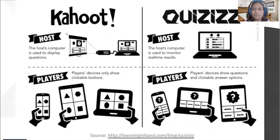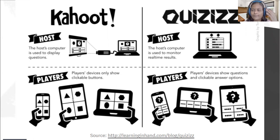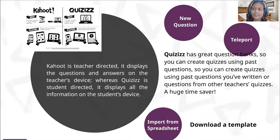Let me start by comparing Kahoot and QEase. In Kahoot, the host computer displays the questions. Students need to refer to the teacher's machine, and the player's device only shows clickable buttons or color codes, which increases cognitive effort. Whereas with QEase, the host computer is used to monitor real-time results — dashboards — and the player's device shows questions and clickable answer options. Kahoot is a teacher-centric tool, while QEase is a learner-centric tool. Kahoot displays questions on the teacher's device; QEase displays all information on the student's device, reducing cognitive fatigue.